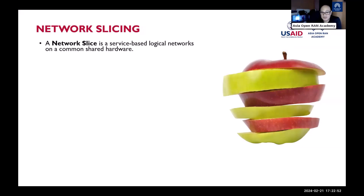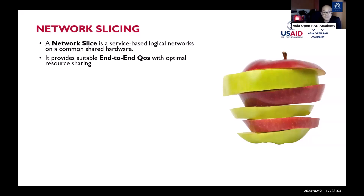Network slicing is one of the key features of 5G technology. Imagine a fruit like an apple or orange sliced into different pieces — each slice represents a separate dedicated network within the broader 5G network, catering to specific needs and requirements, providing suitable end-to-end QoS with optimal resource sharing.